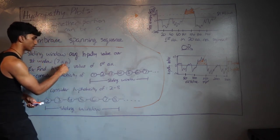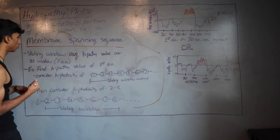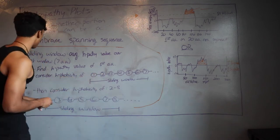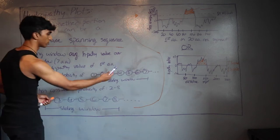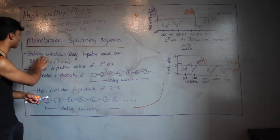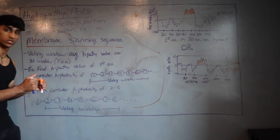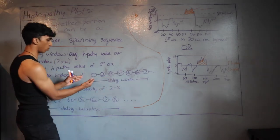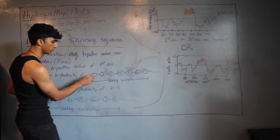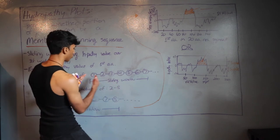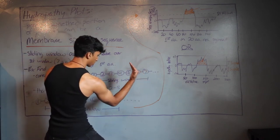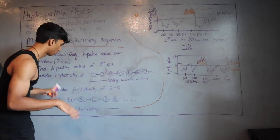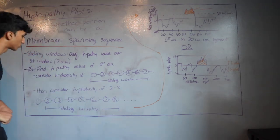Here's how to find the hydropathy value using a sliding window of seven amino acids. To find the hydropathy value for the first amino acid, consider amino acids one through seven, look at their seven hydrophobicity values, average them, and that gives you the hydropathy value for the first amino acid.